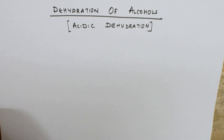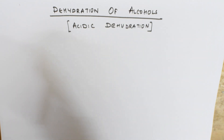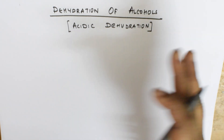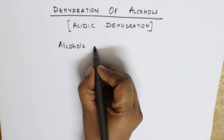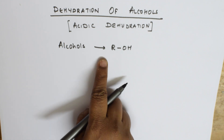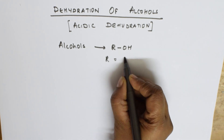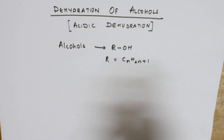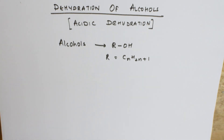Here I'm going to take alcohol. As the name suggests, alcohols are hydroxy derivatives of alkanes. We represent alcohols with the formula ROH, where R is the alkyl group with the general formula CₙH₂ₙ₊₁. Since they are derivatives of alkanes, that's the reason we write this general formula.